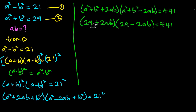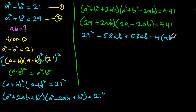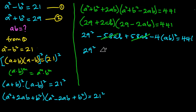Let's expand this product. We have 29 times 29 which is 29 squared, then 29 times negative 2ab which is negative 58ab. Then 2ab times 29 is positive 58ab, and 2ab times negative 2ab is negative 4ab squared. This is equal to 441. Straight away you can see that the negative 58ab and positive 58ab cancel, so we are left with 29 squared minus 4 times ab squared equals 441.